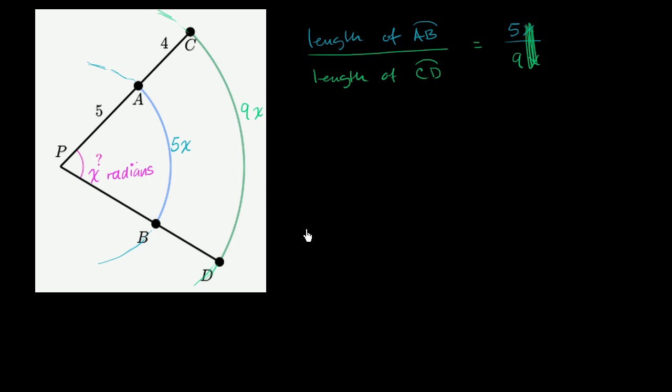Now let's say someone says, oh, that was pretty good. You were able to figure out this ratio. Let's say we were to give you one of these lengths. Let's say they tell you that the length of arc AB is 25 over 8.